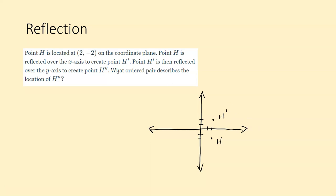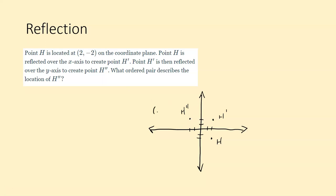Then point H prime is reflected over the y-axis to create point H double prime. The y-axis goes up and down, so we reflect over that — it should go over here. Now instead of two points to the right, it's two points to the left; nothing changed up or down because we're reflecting from the right side to the left side. So H double prime is at negative 2 comma 2.